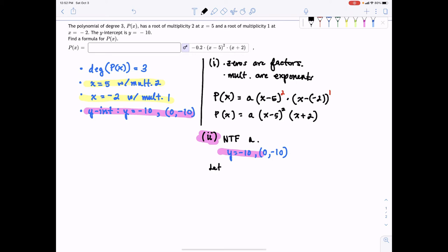So we'll let 0, negative 10, substitute to find a. Okay, so if we have p(x) that is equal to a times x minus 5 squared times x plus 2, and we have the ordered pair, 0, negative 10.